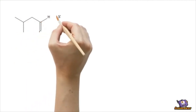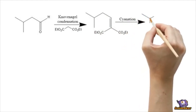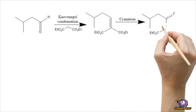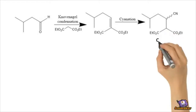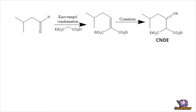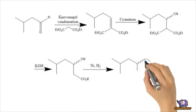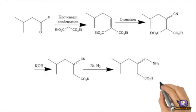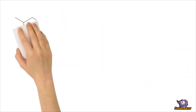The first-generation synthesis, which is both wasteful and hazardous, involved isolating the cyanodiester starting material known as 2-carboxyethyl-3-cyano-5-methylhexanoic acid ethyl ester, better known as CNDE. Isovaloaldehyde undergoes Knoevenagel condensation, which is nucleophilic addition by the ester eliminating water, and is then followed by cyanation. CNDE undergoes basic hydrolysis, then nickel-catalyzed hydrogenation.